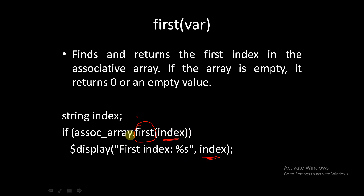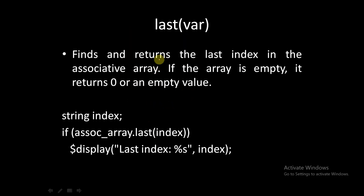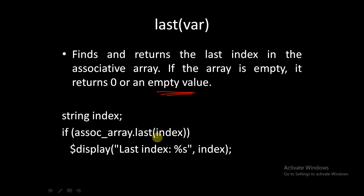The next built-in function is `.last`. Similar to `.first`, this finds and returns the last index in the associative array. If the array is empty, it returns zero or an empty value. While `.first` returns the first index value, `.last` returns the last index value.